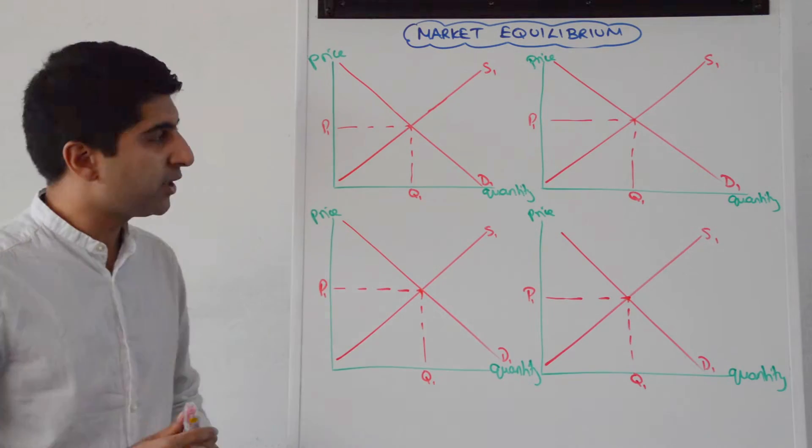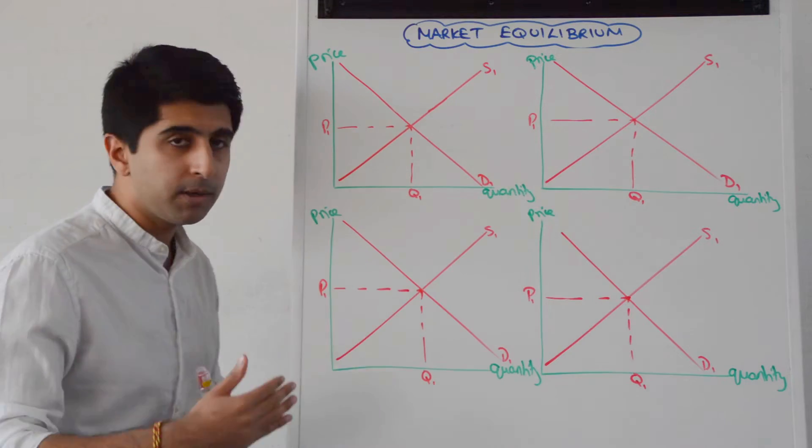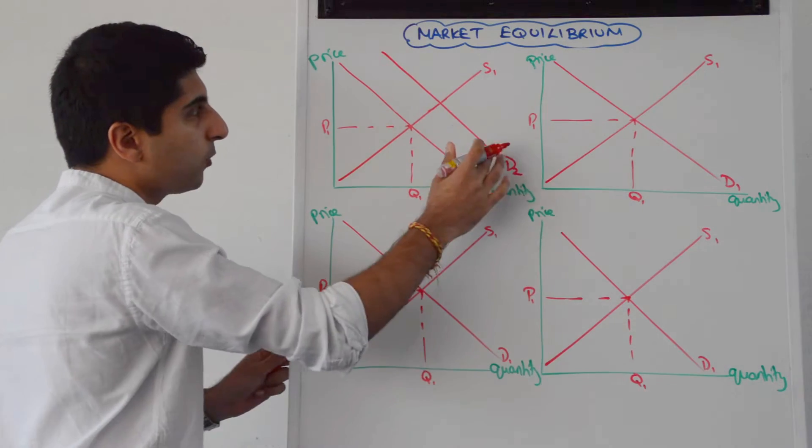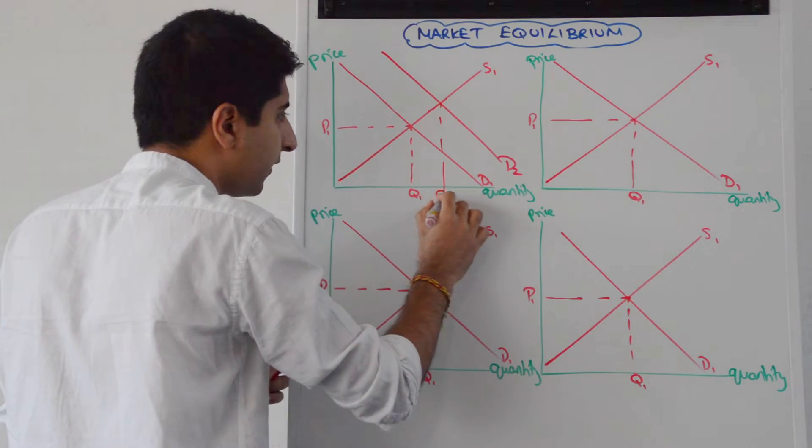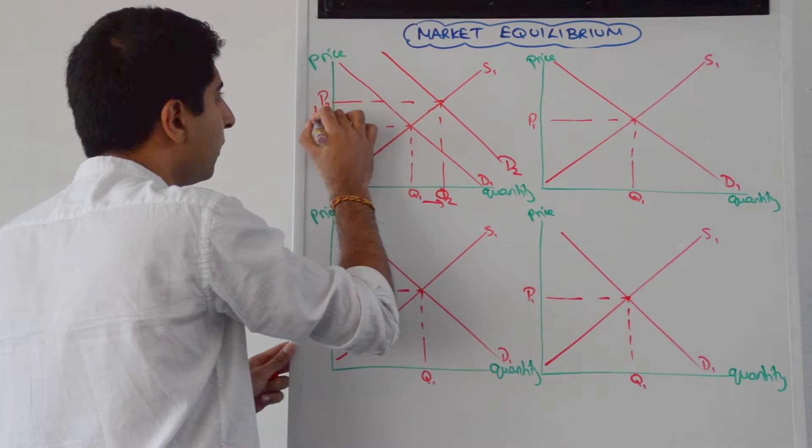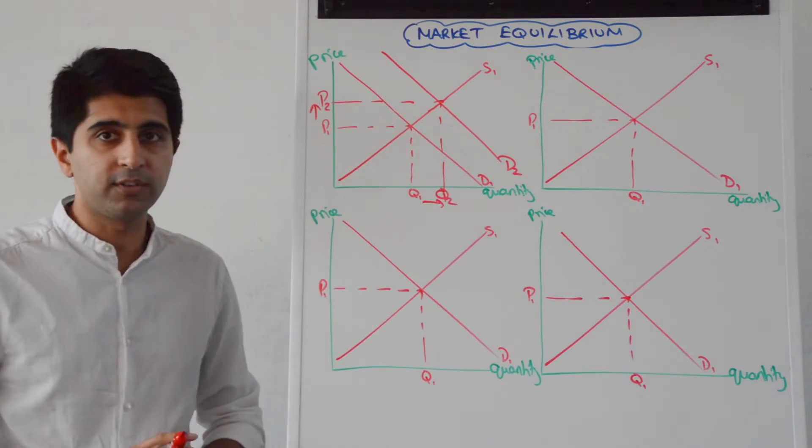Let's start with a demand shift to the right. So here we are at equilibrium. Demand shift to the right. Let's draw it like that. New equilibrium is where D2 cuts S1. That gives us an increase in quantity from Q1 to Q2 and also an increase in price from P1 to P2.